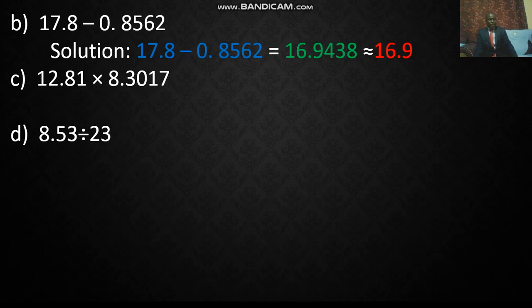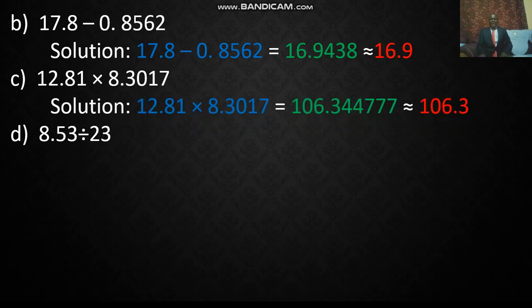Multiplication and division: you look at the one that has the least number of significant figures. So in this case you have 12.81, four significant figures. The answer will be to four significant figures. So when you multiply you get 106.344777, which is accurate to four significant figures, estimated to be 106.3.